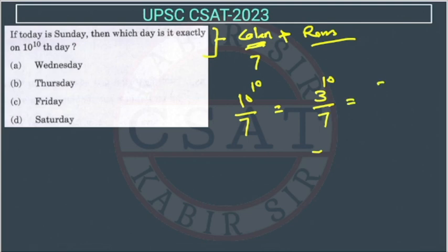We can write it like 3 to the power 3 upon 3. 3 into 3 is 9, 1, 3 is remaining. So we will write it separately divided by 7. This will become 27 to the power 3, and this will be 3 upon 7.